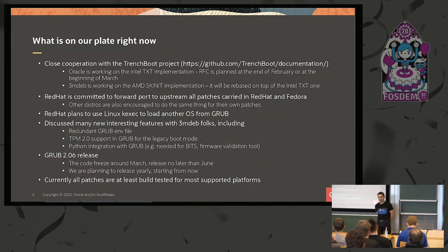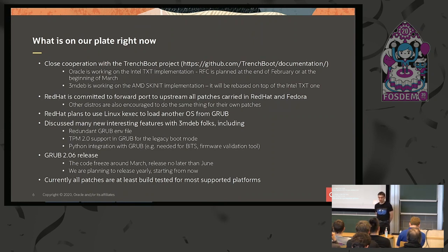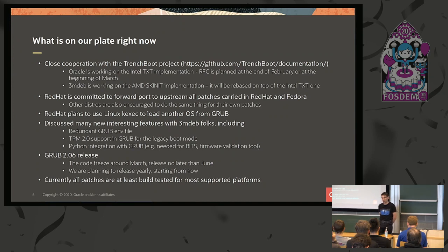What's happening right now? The biggest thing we are working on is the Trenchboot project. We are doing two things in parallel: I am focusing on TXT implementation for Grub — I had a nice presentation together with Piotr from coreboot about this work yesterday — and coreboot is focusing on AMD SK unit implementation for Grub. I hope to release the RFC for Intel TXT at the turn of February and March, and then AMD SK unit implementation will be merged, as we expect a lot of common parts between these two features.